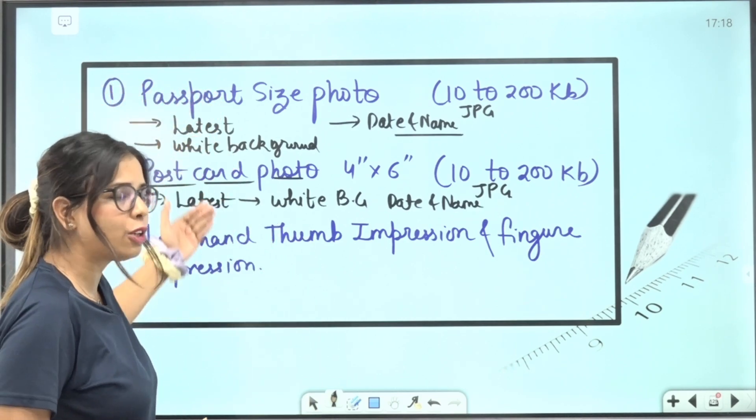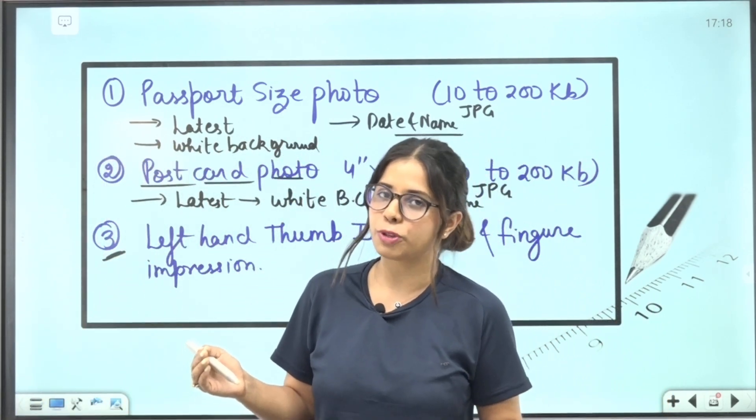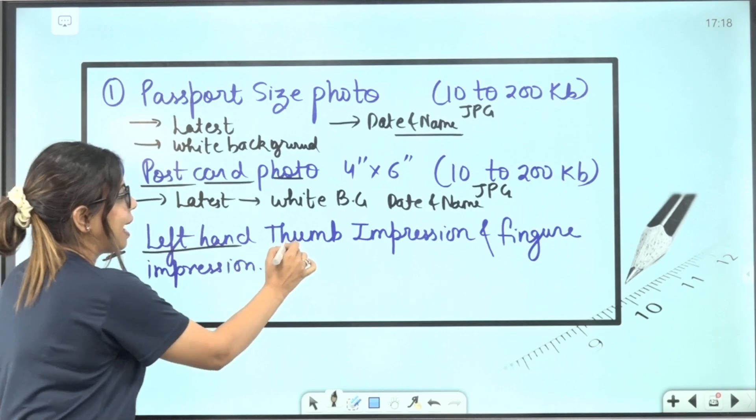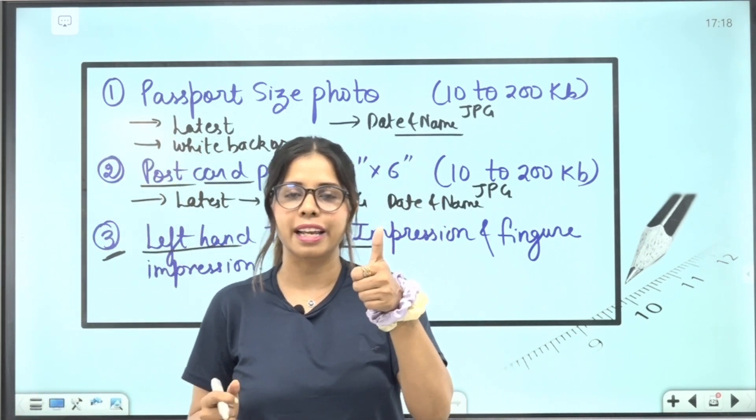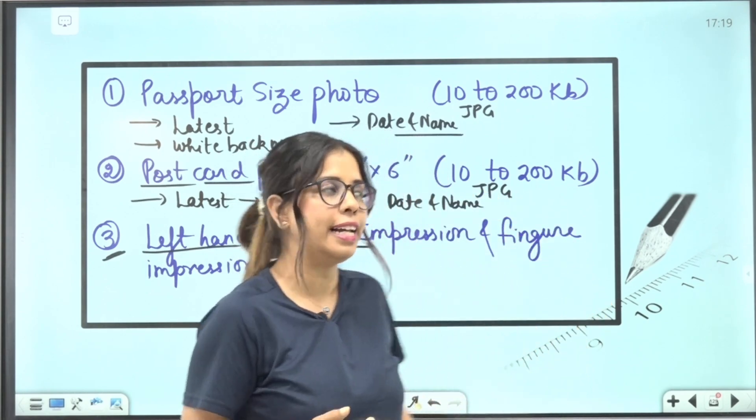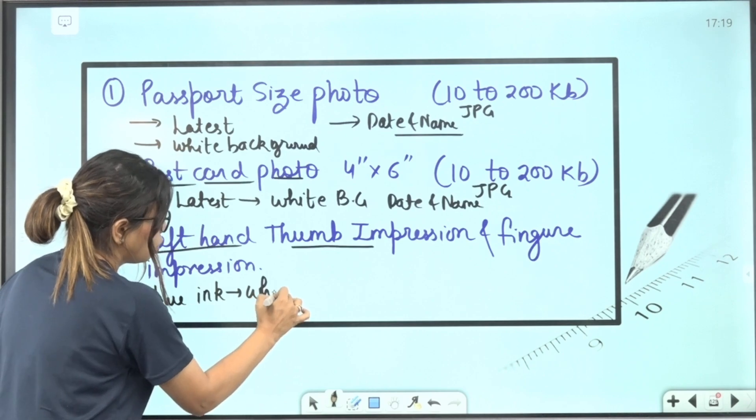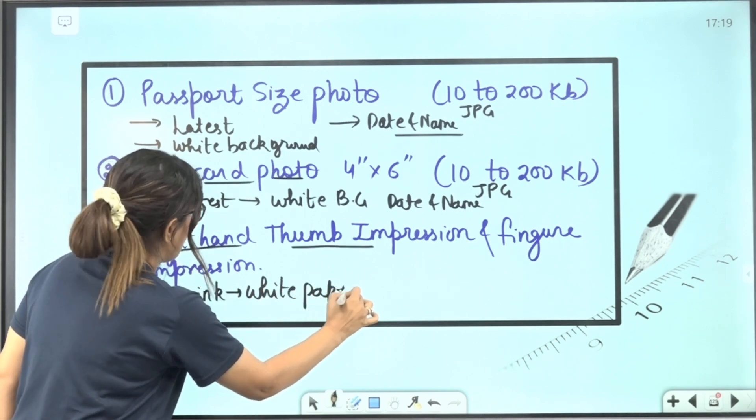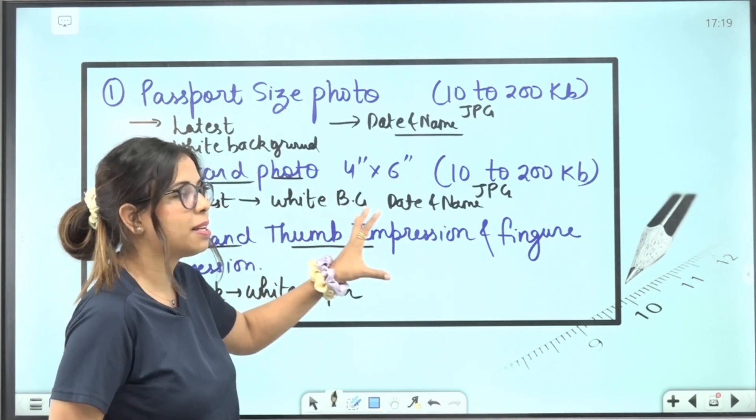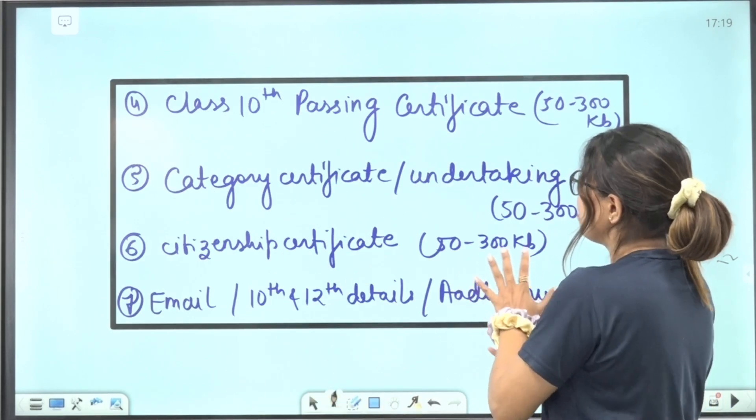After that you come to the third document. These three things are 100% compulsory. The third important thing is left hand thumb impression. Your left hand, you have the ink pad on that thumb impression. Take a white paper, you have to take a thumb impression from blue ink. And you also have to take a finger impression. And whatever image you have, you have to keep in between 10 to 200 KB when you upload it. These are important documents.